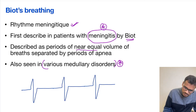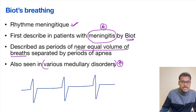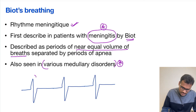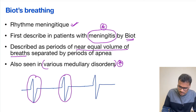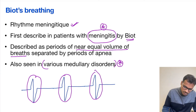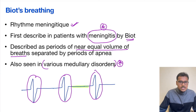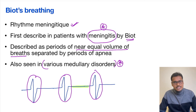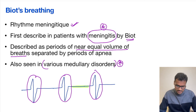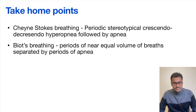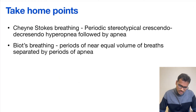In Biot's breathing, there are usually near-equal periods of breaths separated by periods of apnea. We can see that all the breaths are of nearly equal depth, separated by the periods of apnea. So this does not have the classical crescendo-decrescendo pattern of Cheyne-Stokes breathing.